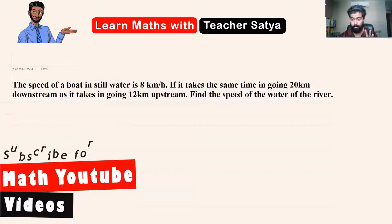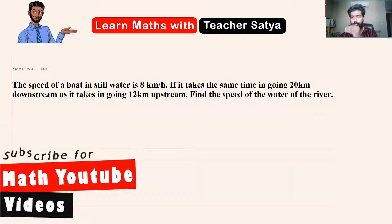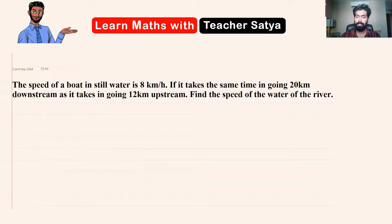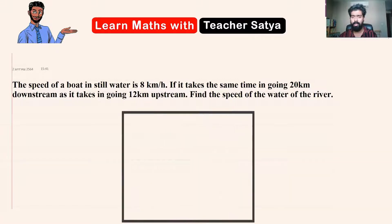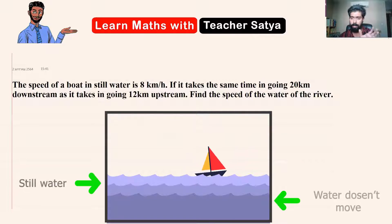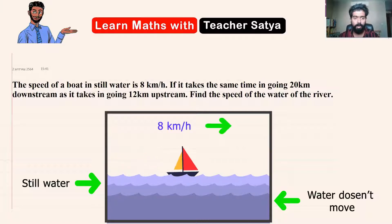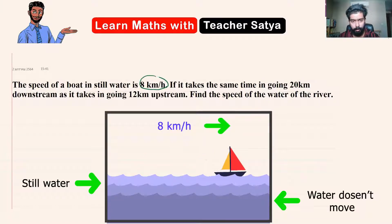With word problems, they always give us something and we have to find something. So we know something and we've got to find something. In this case, let's write down what we know. The speed of the boat in still water — still water means the water doesn't have any upstream or downstream force, no speed of the water taken into consideration — is 8 kilometers per hour.